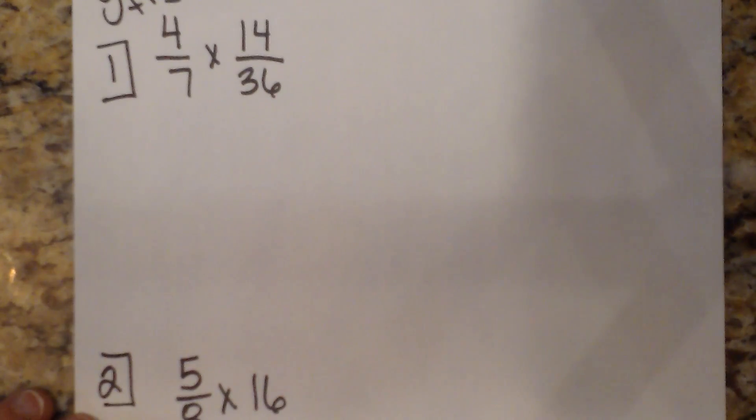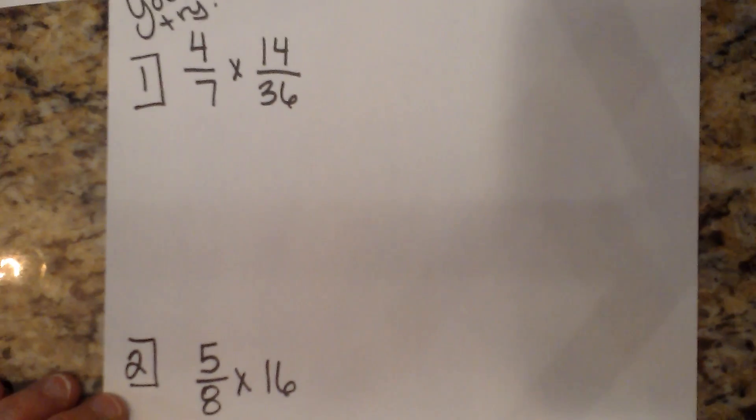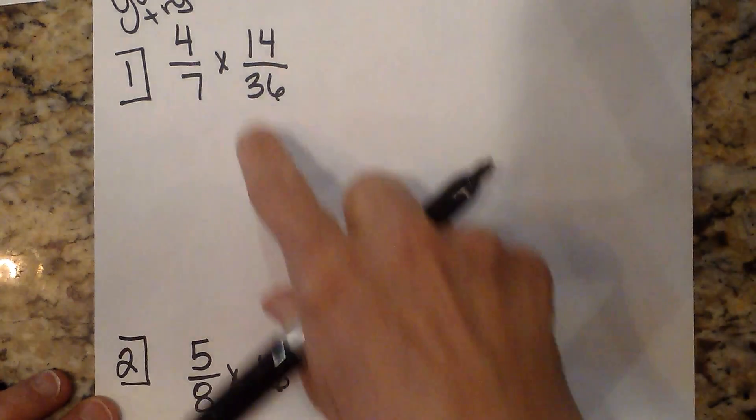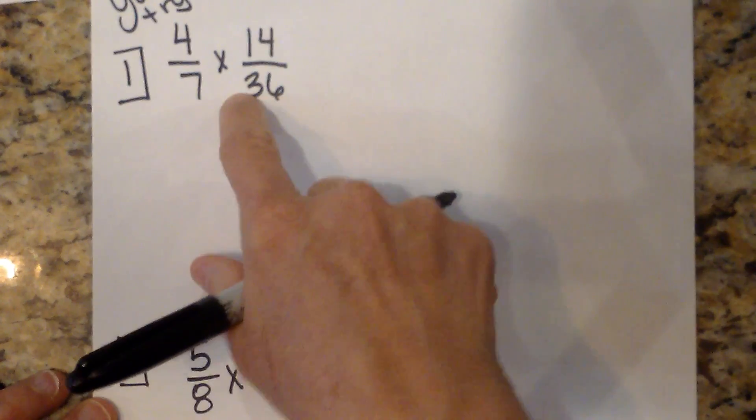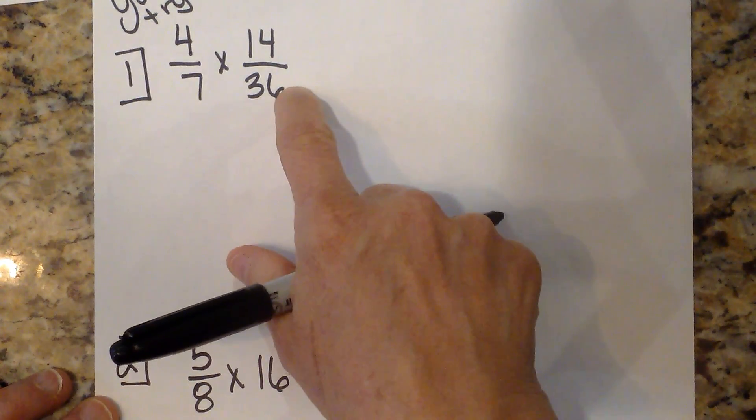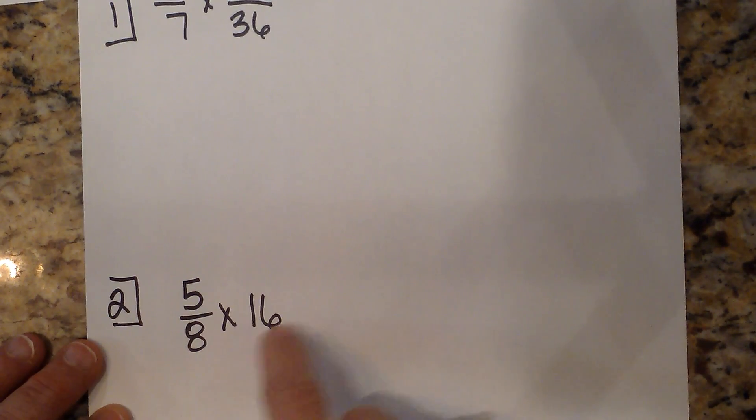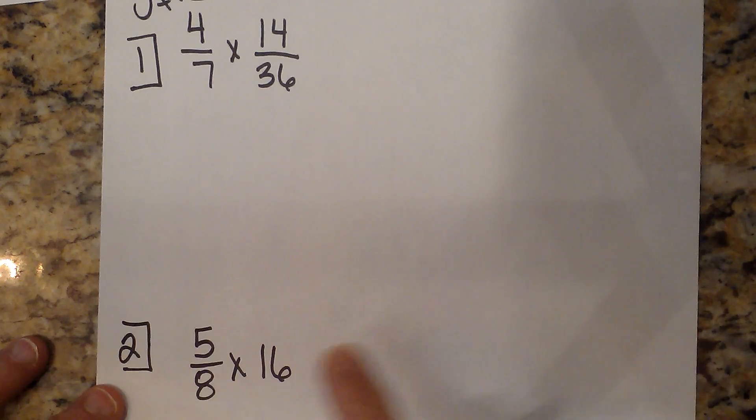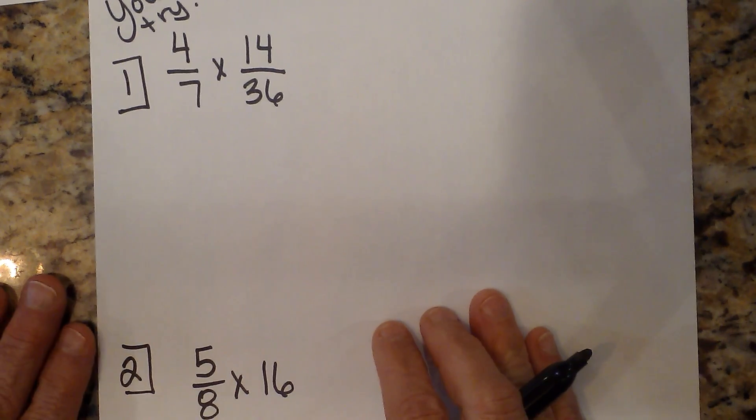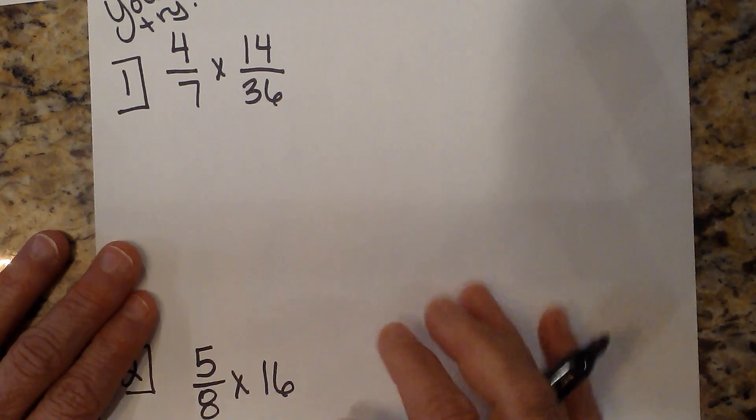Now I'm going to bring over two more, and I want you to pause the video and try these two. So here they are. The first one is 4/7 times 14/36, so you can pause and do that one. And then here's one with a whole number: 5/8 times 16. I'm going to go ahead and work them so you can see the answers, but you're welcome to pause and work through them.